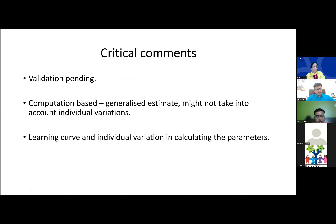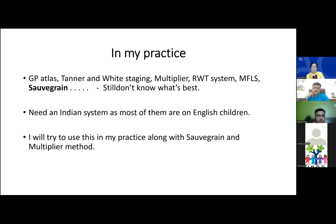Critical comments: validation of this system is still pending; it is mostly computation-based and may not account for individual variations; there is a learning curve in calculating these parameters. In practice, the multiplier method and Shapiro grains method are commonly used, and it remains unclear which is best or what combination should be used. A study of Indian patients is needed because most systems are based on non-Indian populations, and there is significant variation in maturity between populations.